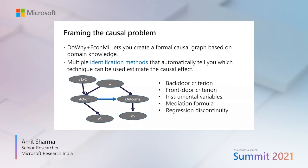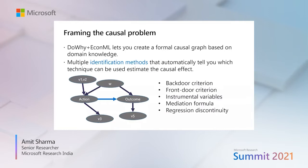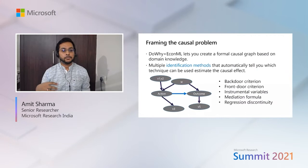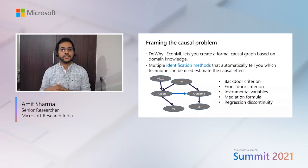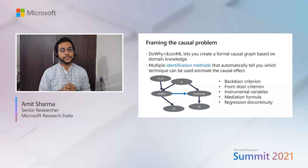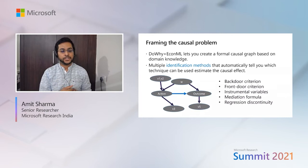For any causal problem, a causal graph is a well-established way of expressing your assumptions, and that's exactly what our toolkit helps you do. As a domain expert, you can enter the variables you're interested in — what's the treatment, what's the outcome, and how other variables are affecting it. The power of do-calculus and causal inference work done over the past decade now helps automatically figure out, first, if the causal effect is identifiable — meaning can you find out the causal effect even with infinite data — and second, which methods are applicable. Automatically based on the graph, the library can tell you whether the backdoor criterion, front door, instrumental variables, mediation, and so on are applicable for your specific problem.